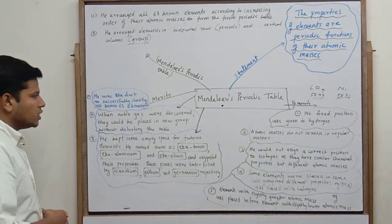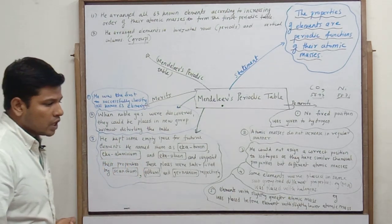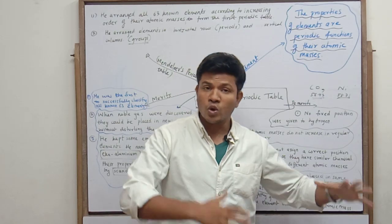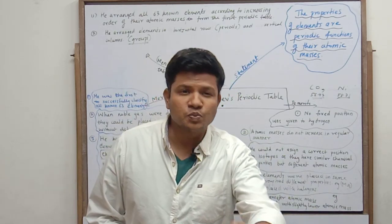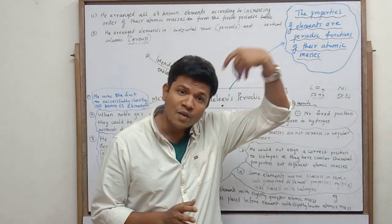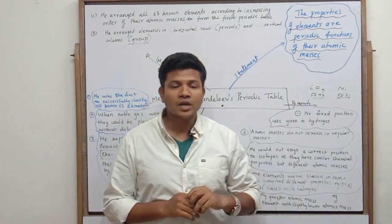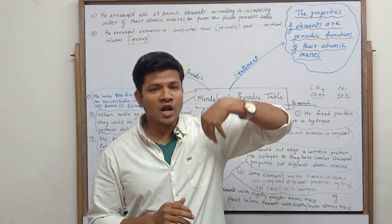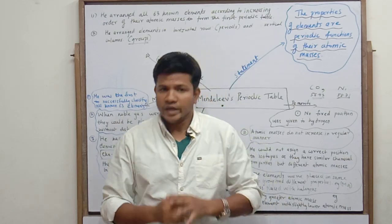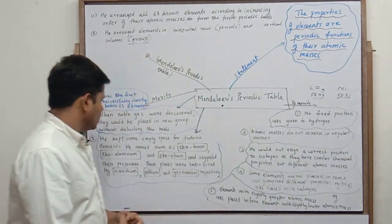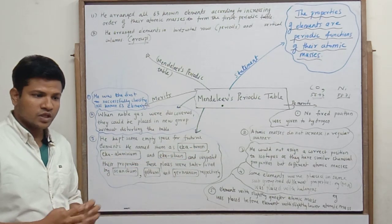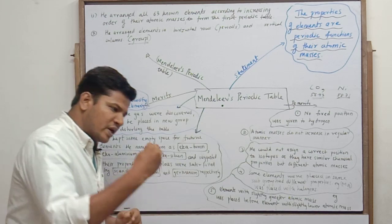Not only this — in his original periodic table, Mendeleev left some empty spaces, saying these are for future elements. He thought that future elements would come and fill these spaces. Not only that, he gave them names: eka-boron, eka-aluminium, and eka-silicon — three elements he named and even predicted their properties.